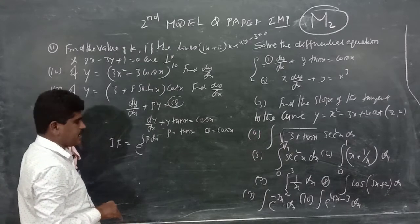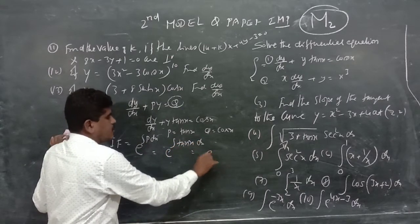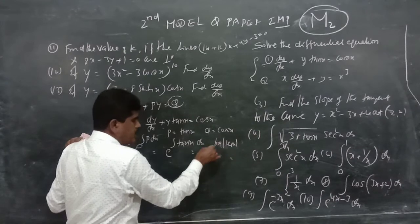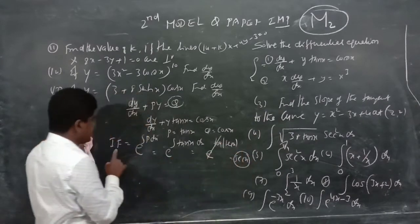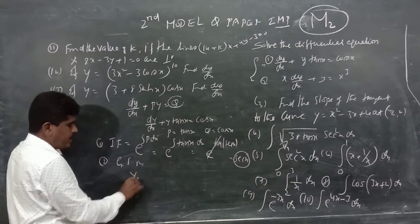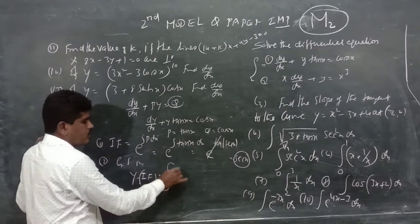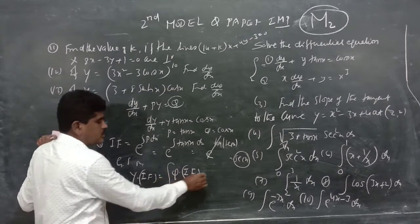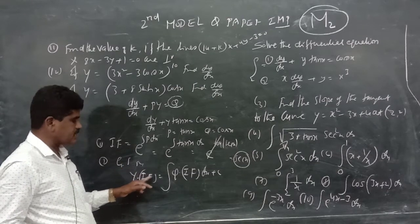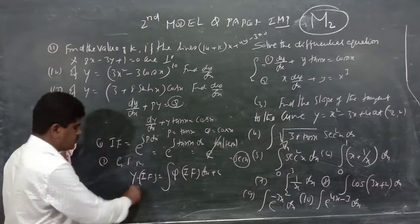We compute e to the power of the integral of tan x dx. The integration of tan x is log(sec x), so e to the power of log(sec x) equals sec x. Therefore, sec x is the integrating factor. The general solution formula is y times the integrating factor equals the integral of Q times the integrating factor plus C.